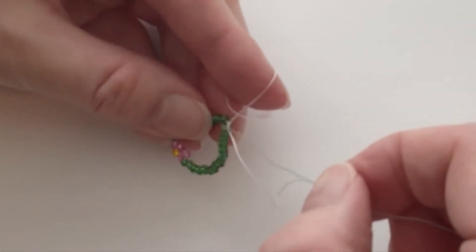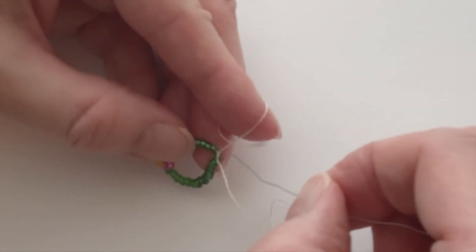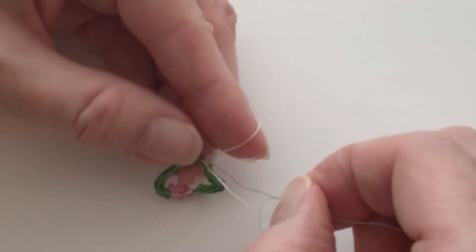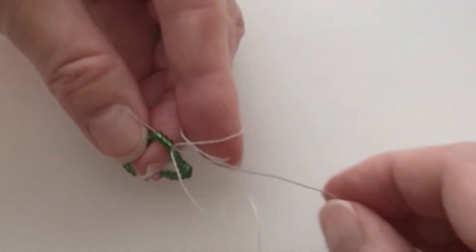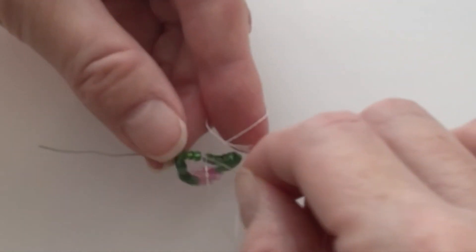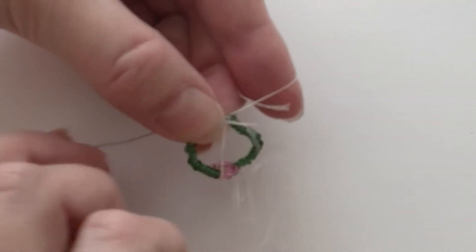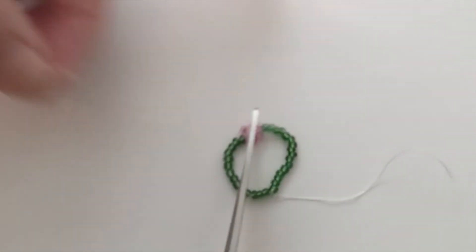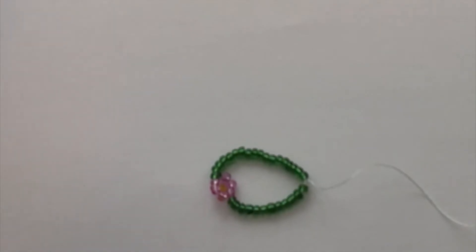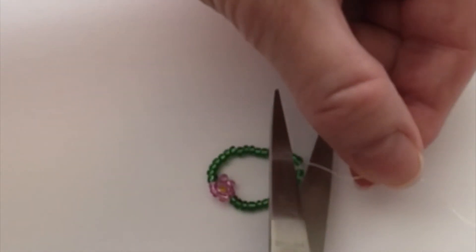Once the glue is dry, thread the beading needle back down through three or four of the seed beads, and then clip your thread there. Do the same thing for the other side and clip the remaining string.